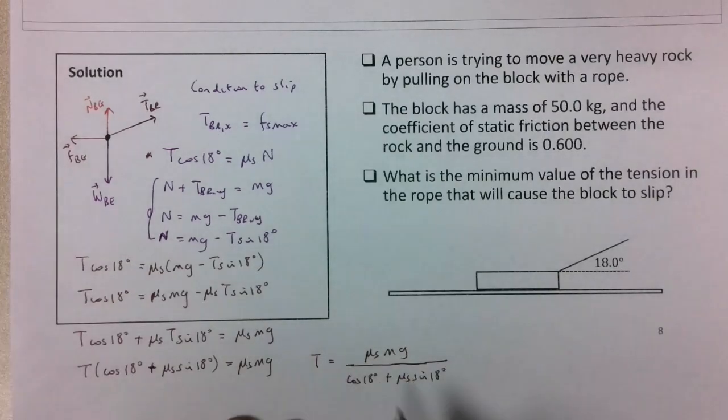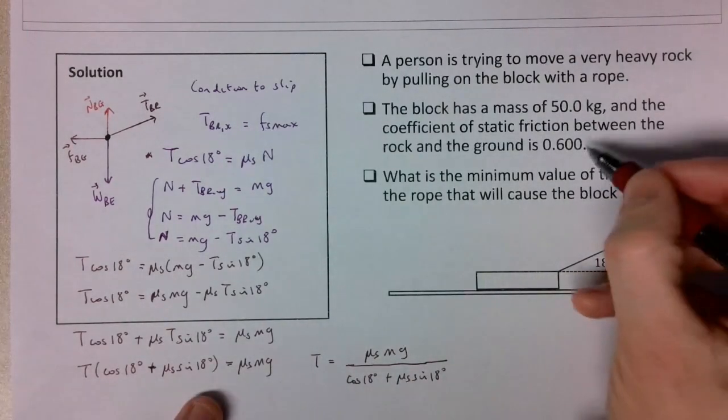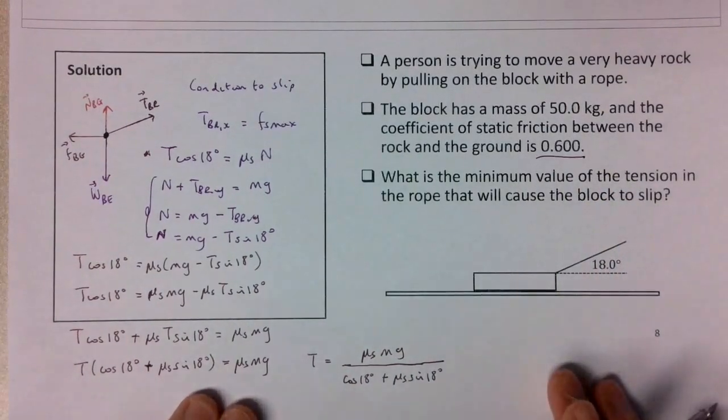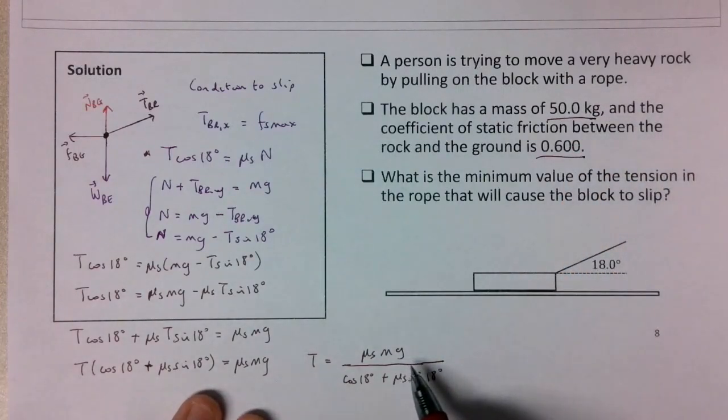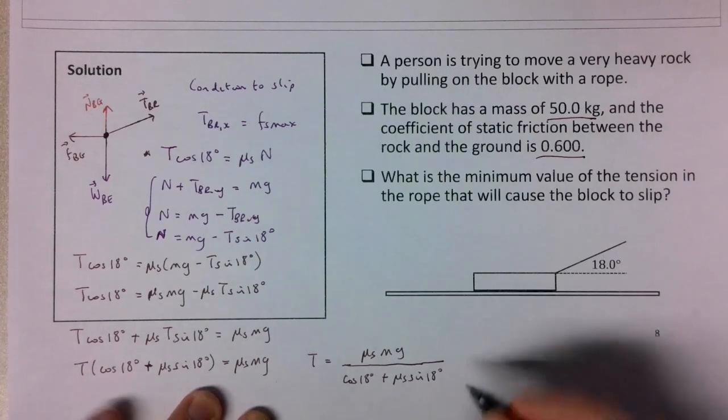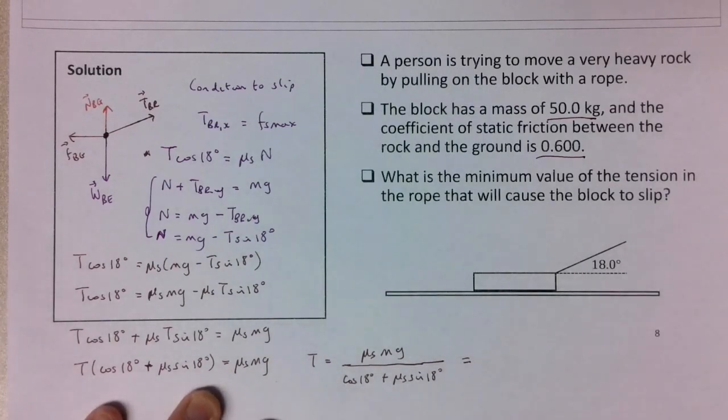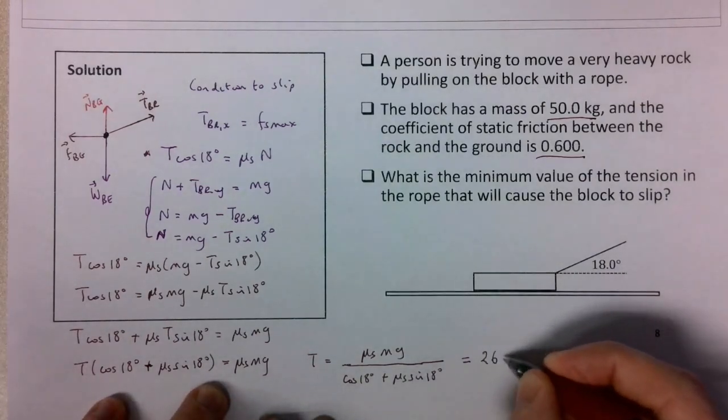And you have the μ_s value in the question. And the mass is given in the question. 50 kg times 9.8 m/s². The cosine of 18, μ_s again is given. And this all works out to be 260 N.